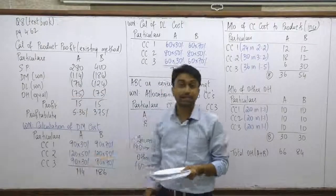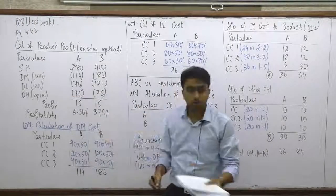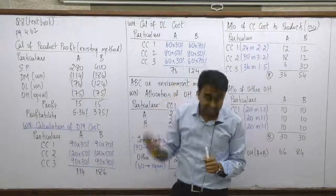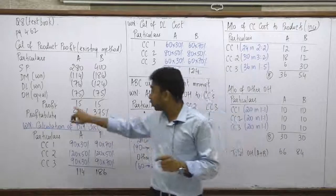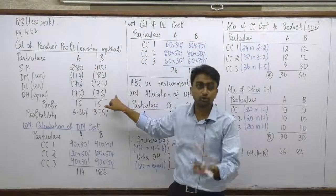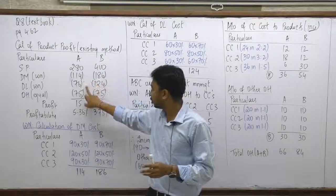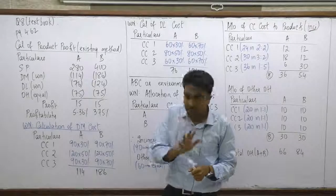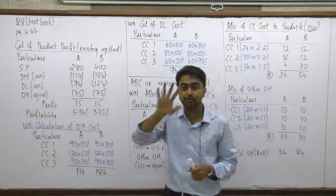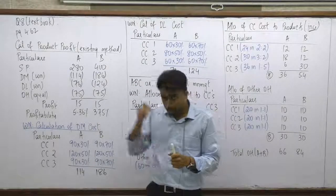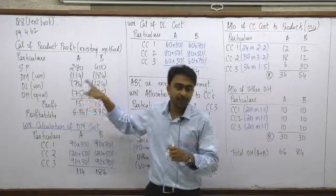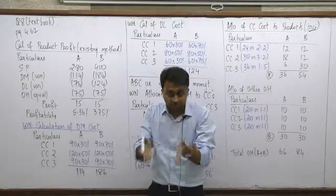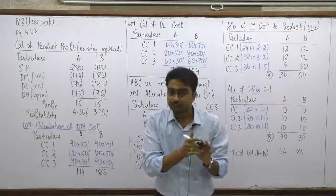Now for overheads under the existing/traditional system: the question clearly states all overheads go equally to A and B, so ₹75 goes to A and ₹75 goes to B. Adding up selling price and all costs, we get the profit on a per-unit basis and profitability for comparison with the EMA-based allocation. Now, before moving to EMA, let's analyze what's happening: out of ₹150 overheads, some is the incinerator cost linked to wastage.